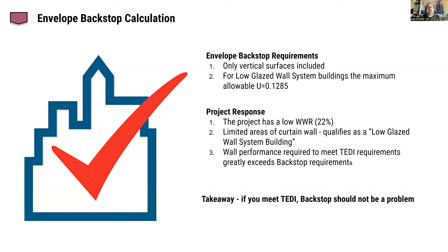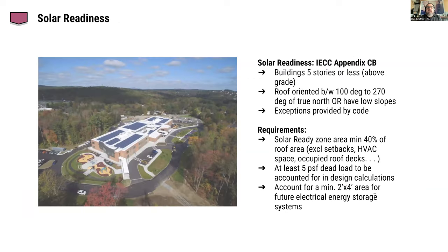Another requirement to think about is solar ready. This is not a new requirement in the code, but it has a couple of new pieces. It applies very much to the typical school, because most school projects are one, two, or three story buildings with a large roof expanse — well suited for solar ready. A lot of schools look at doing solar, and this project will as well, but typically done as a separate project from the building project because of how MSBA and public funding works. It's handy that they can be solar ready rather than having to put solar on the project for permitting.